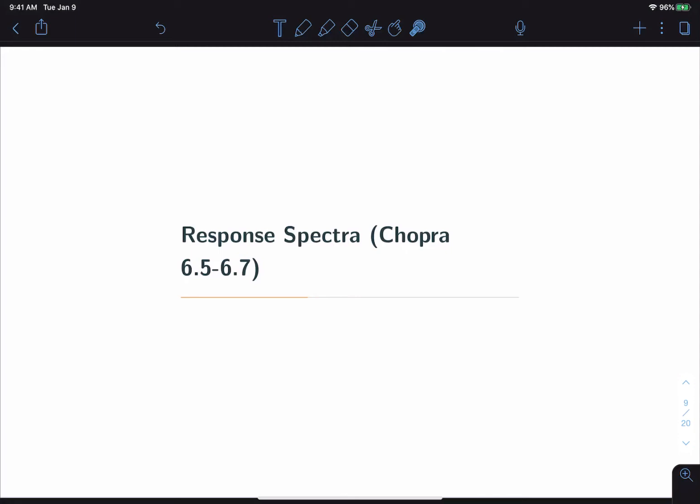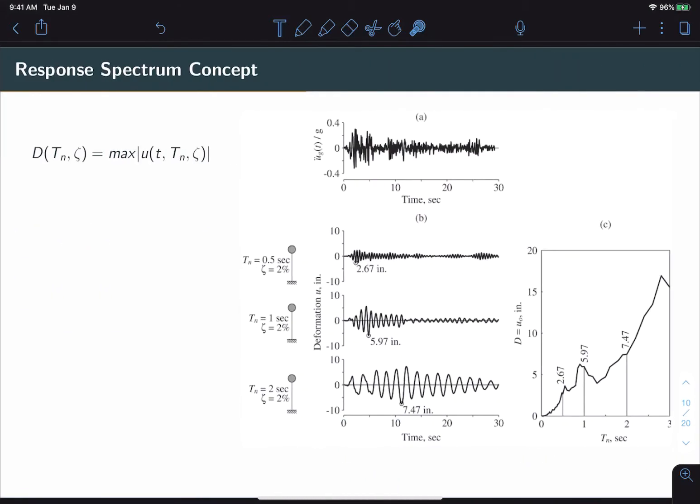In the second video, we will discuss how to build and interpret response spectrum. Now the main concept of a response spectrum is summarized by this equation as well as the image on the right. Let's start with the equation. D is what we call our displacement response spectrum because it is defined in terms of the displacement response U. Now this displacement response U is of course a function of time T, but it is also implicitly a function of the natural period and the damping of the system.